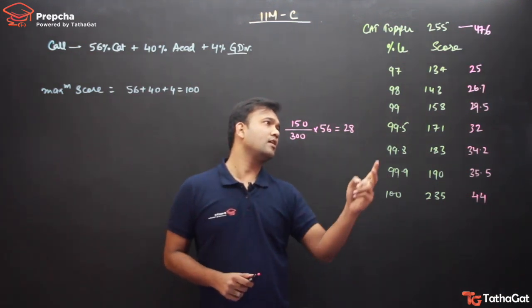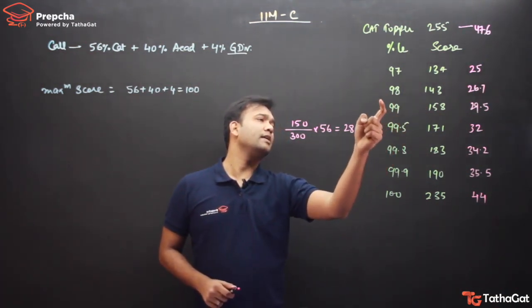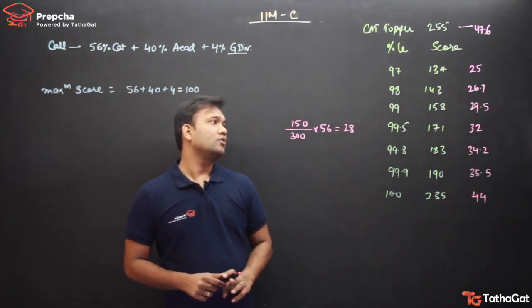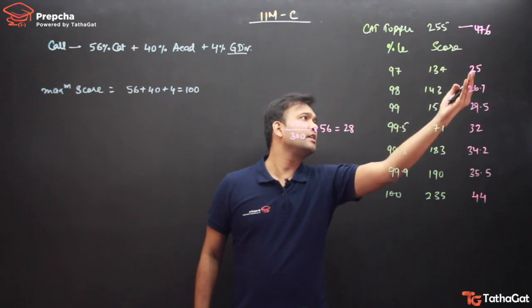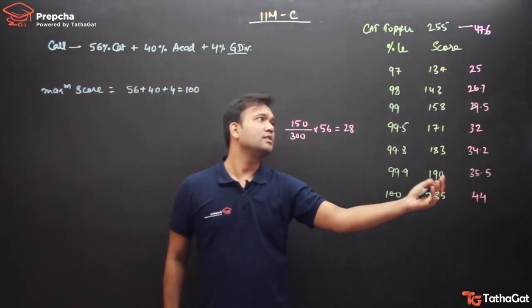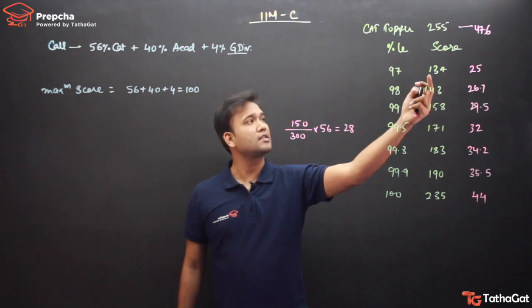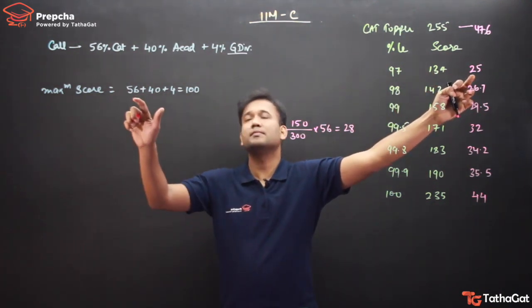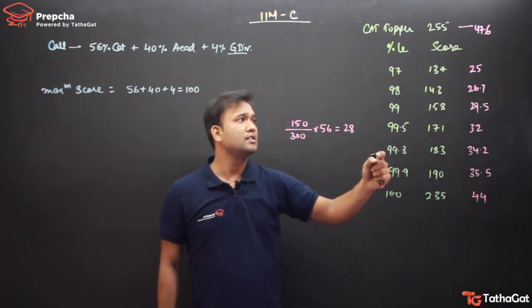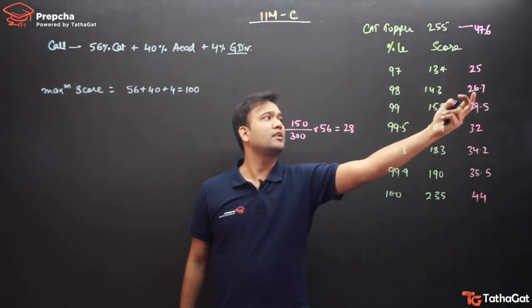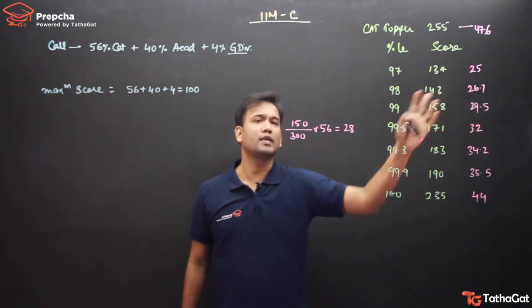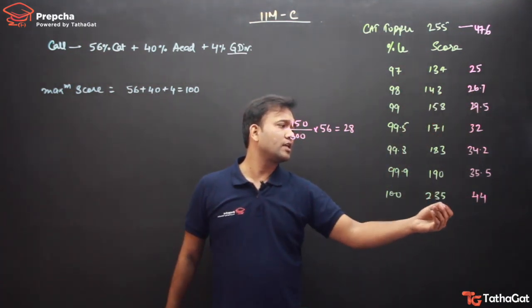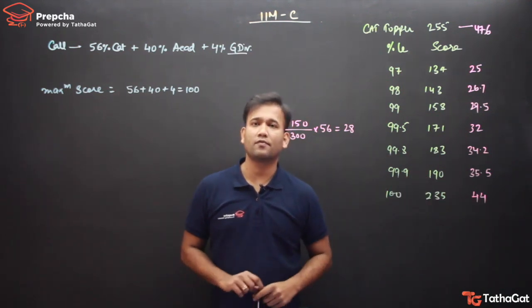A score of 156 is achieved by candidates between the 98th and 99th percentile this year. Looking at different percentile levels: a 97 percentile candidate scores around 134, and at 97 percentile, 56 marks translate to approximately 25. At 98 percentile and so on, going up to 100 percentile.